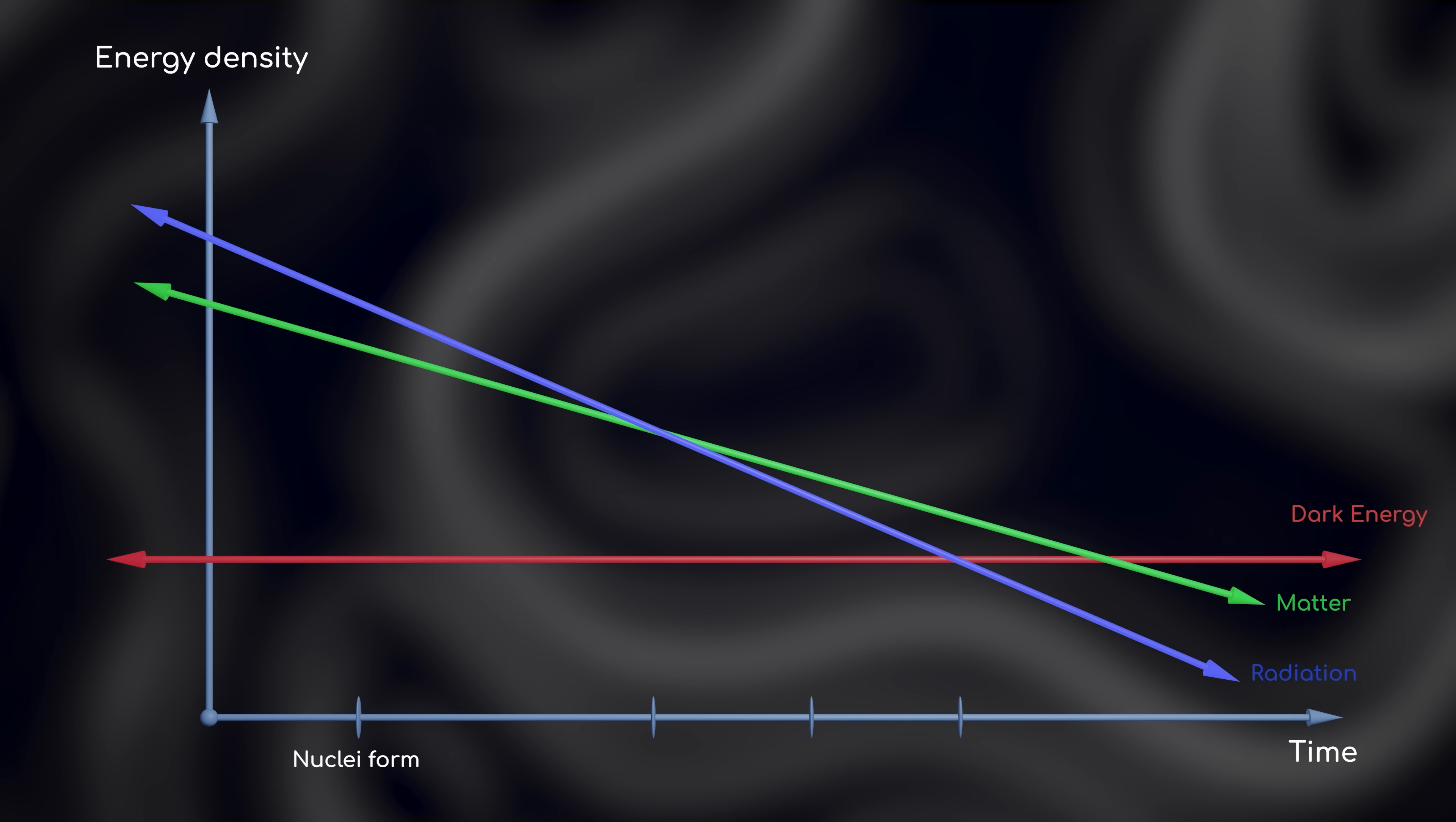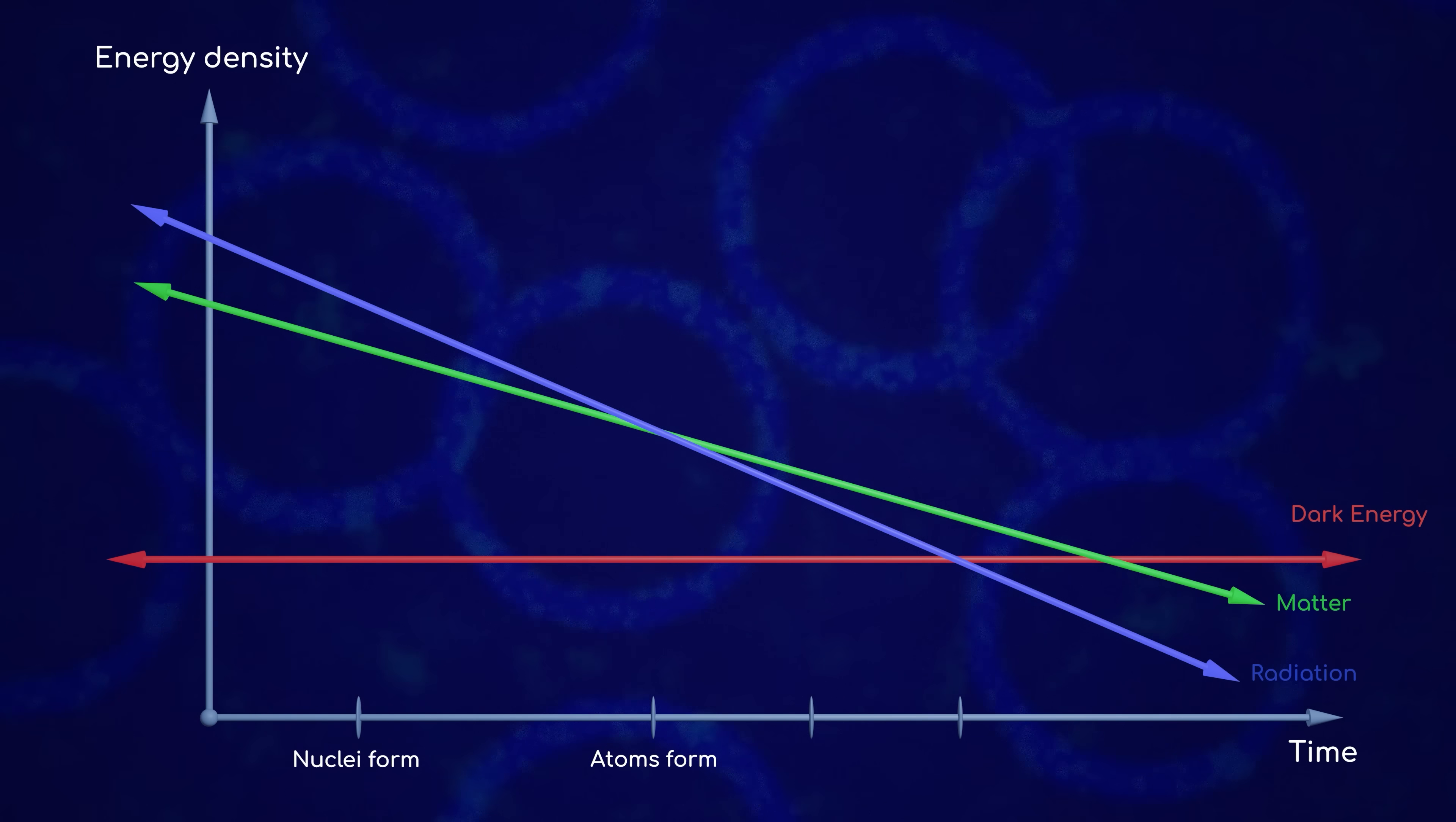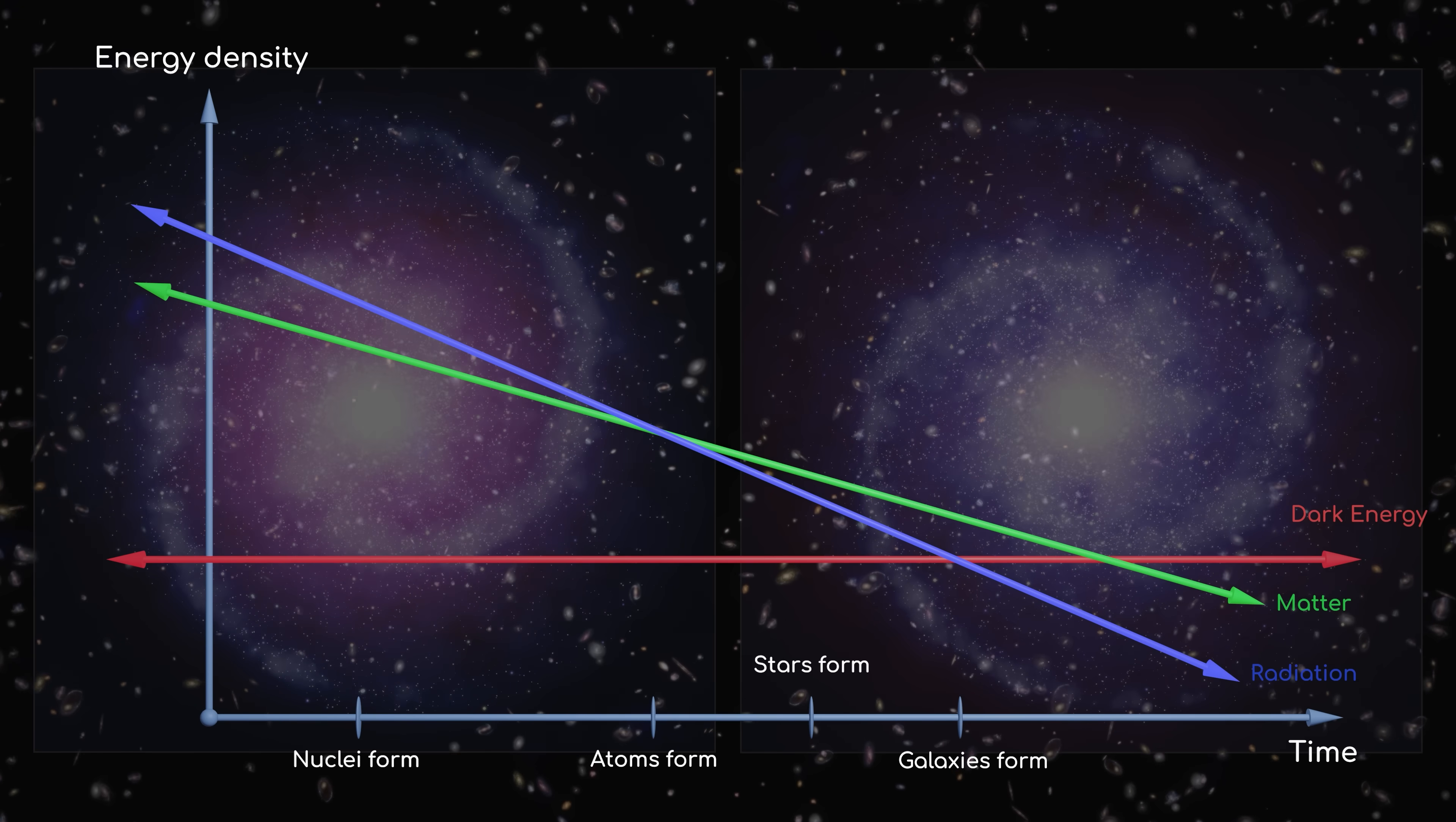Shortly after matter took over as the dominant form of energy, the universe cooled down enough for those nuclei to attract and hold onto electrons, forming the first atoms of hydrogen and helium. These atoms were the building blocks of the very first stars, and these stars were pulled together by gravity to form the very first galaxies and clusters.